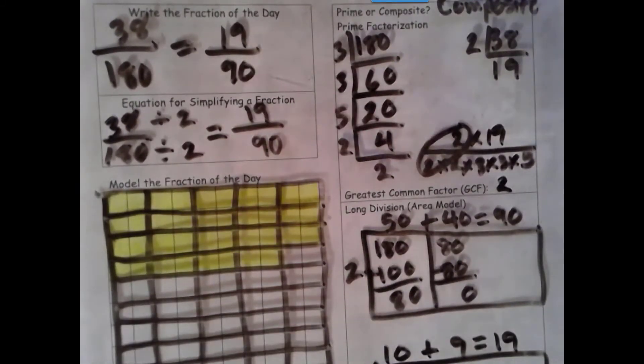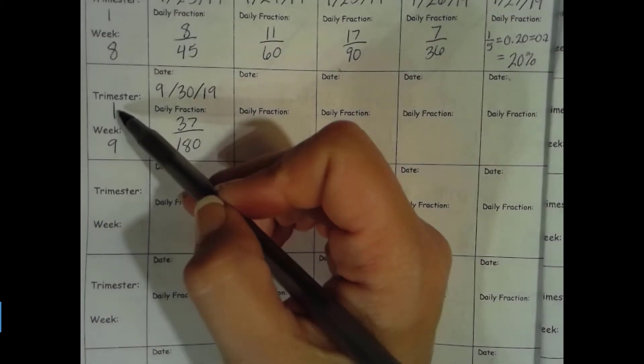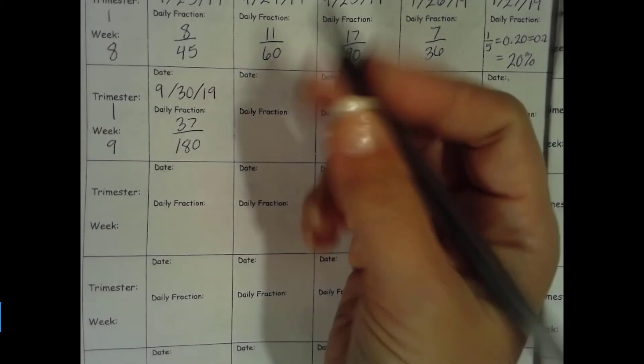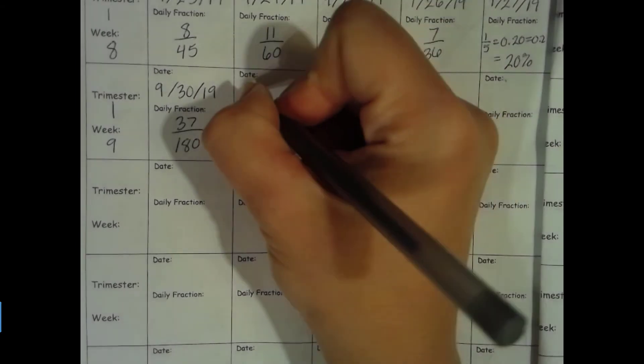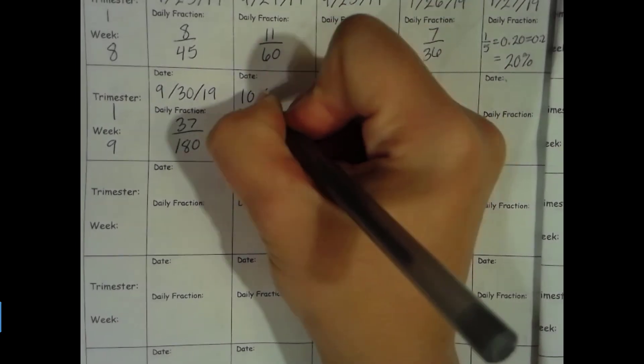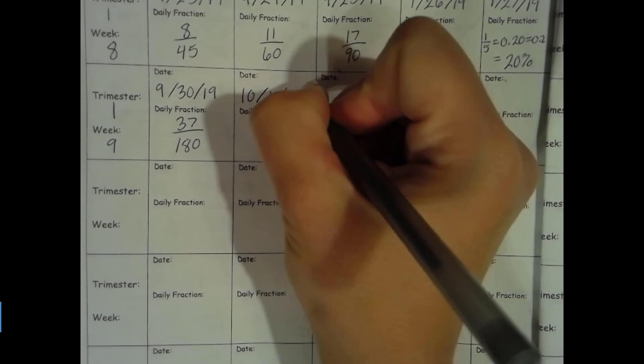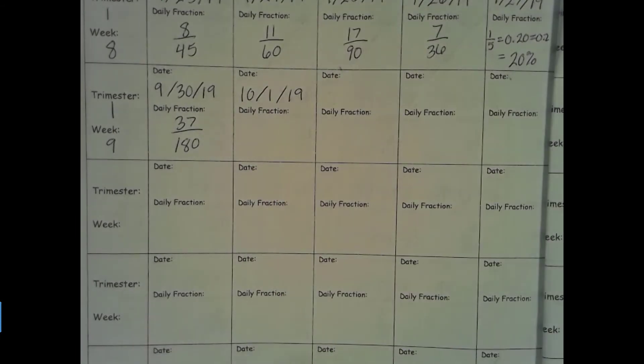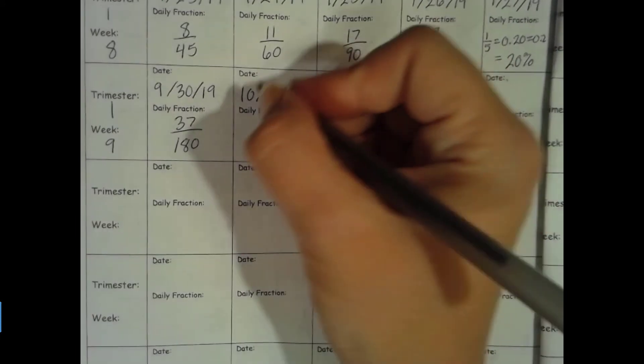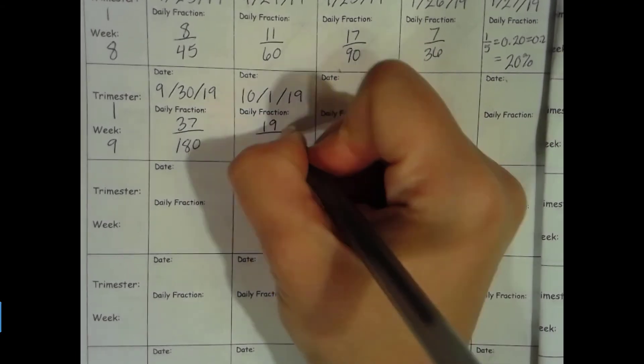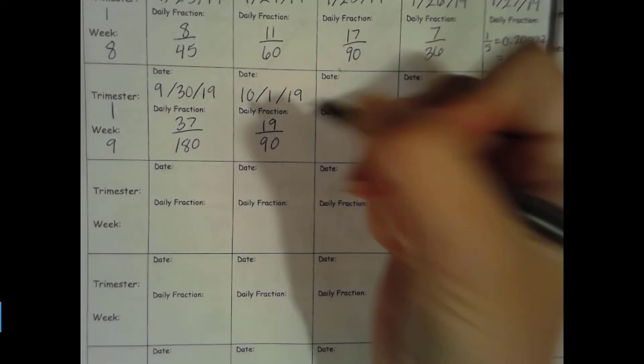Okay, now let's go ahead and fill in our data collection page. Still in trimester 1, week 9. Today is 10/1/19, and our fraction for today is 19/90.